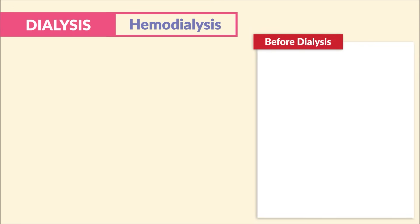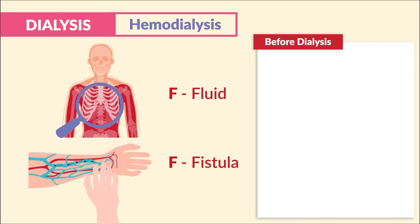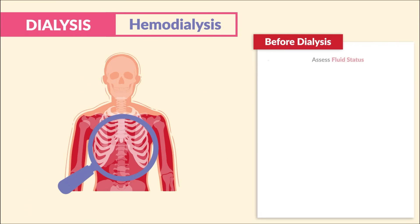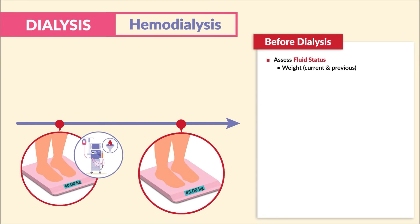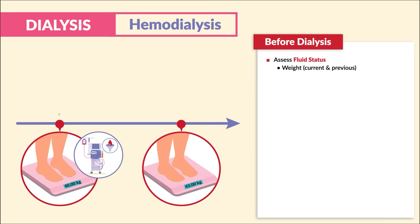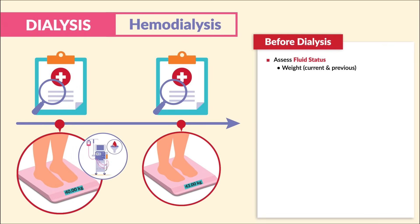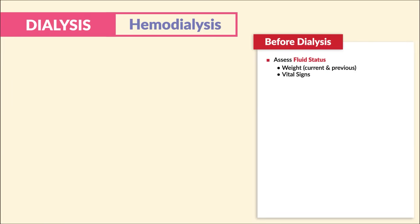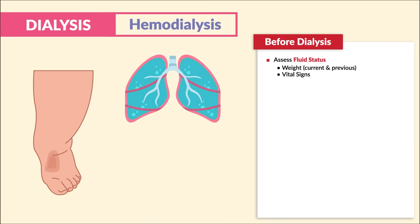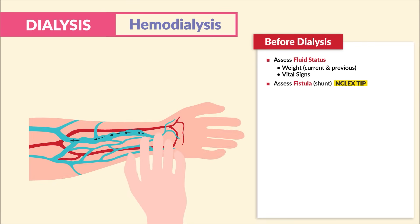Now as far as priority assessments before dialysis, it includes the double Fs: fluid and fistula assessment. To assess fluid status, we always take weights and compare the current and previous. We must check the medical record to compare the current weight with the last post-dialysis weight. We always take vital signs and assess for edema, and also lung and heart sounds.